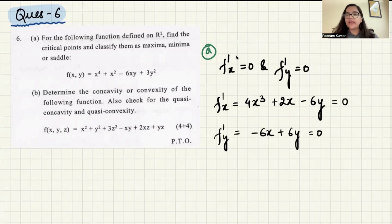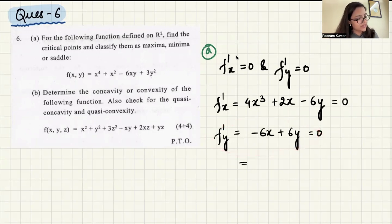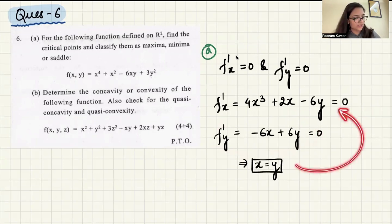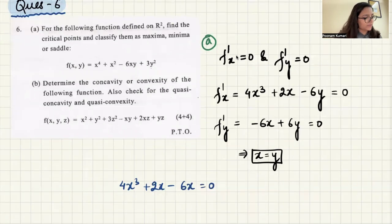I have those x and y pairs where the two things are equal to zero. Looking at the f'y equation, the condition here is that x equals y. So I can use this condition in the f'x equation, substituting y with x, to get: 4x³ + 2x − 6x = 0.